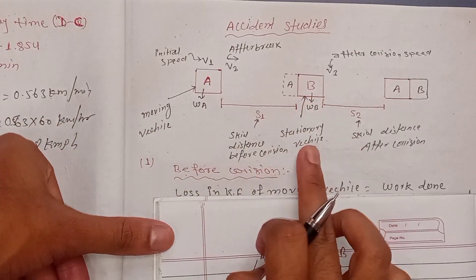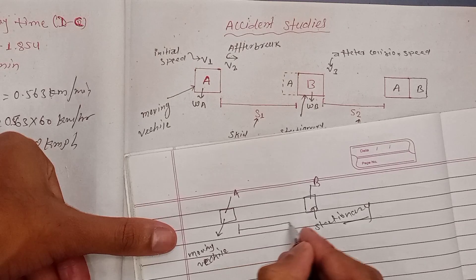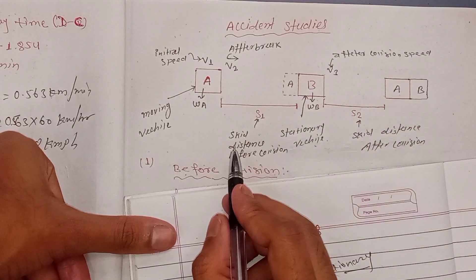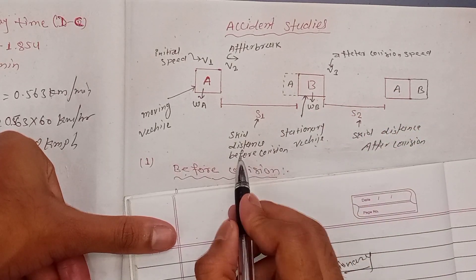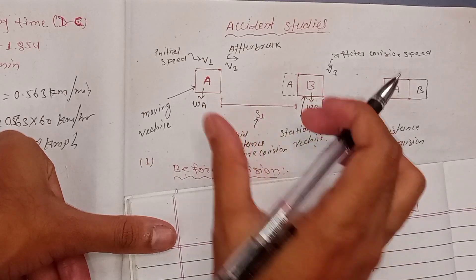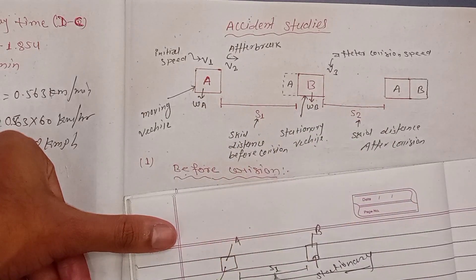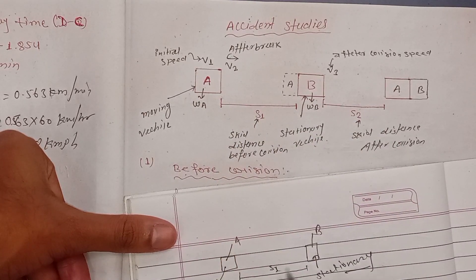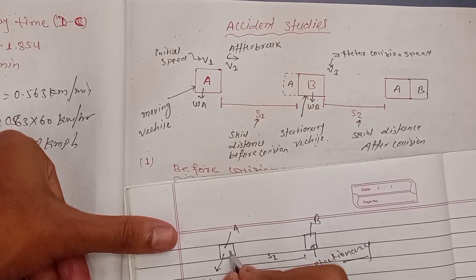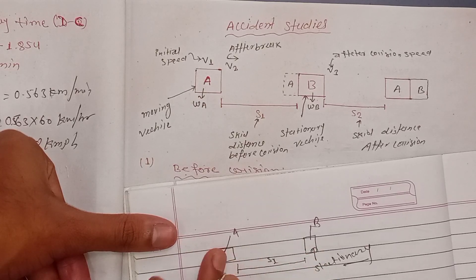We see this only as a station. You know the distance is represented by two different distances. We represent S1, which means the skid distance before collision. You know the distance we start to get — initially, this is the move mode.